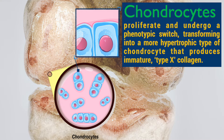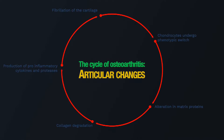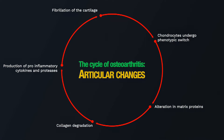They basically transform into a more hypertrophic type of chondrocyte that produces a kind of immature type X collagen. Over time, the alteration in the matrix proteins sets up a feedback loop, stimulating chondrocytes to produce more and more pro-inflammatory cytokines and proteases. Once the collagen is degraded, it is hard to replace, causing further damage to the cartilage matrix and over time resulting in the death of chondrocytes and a matrix devoid of cells.